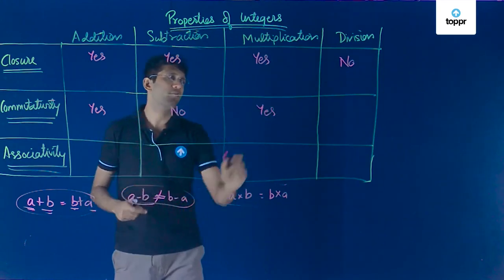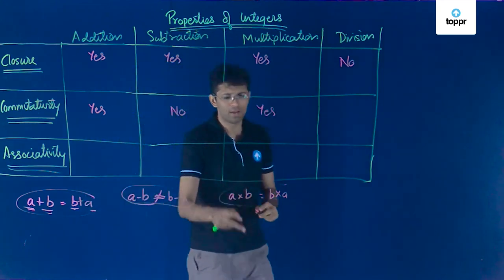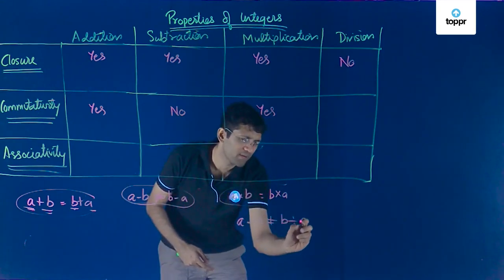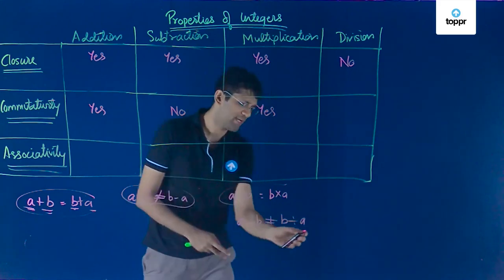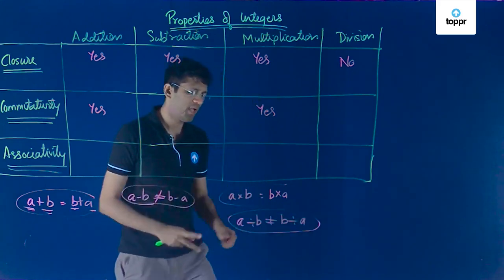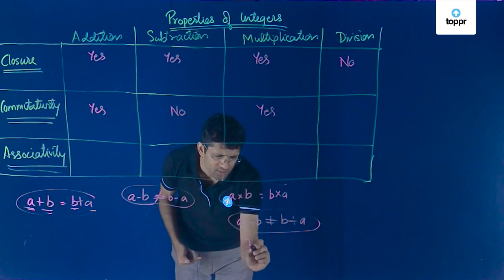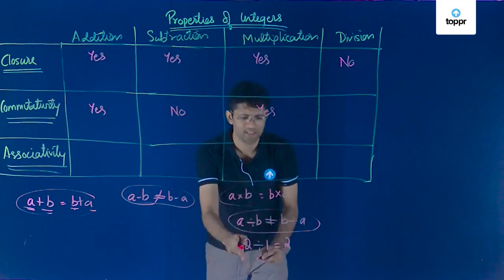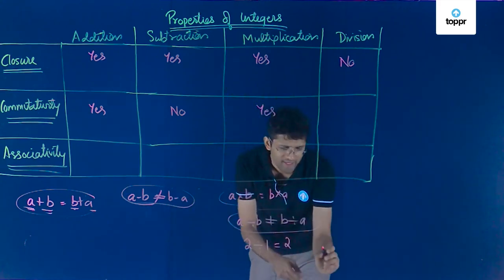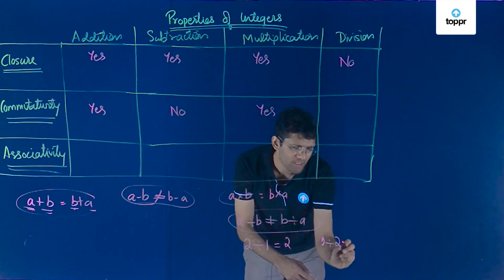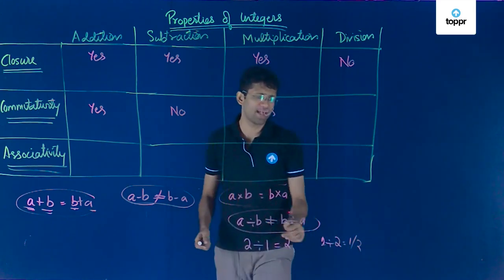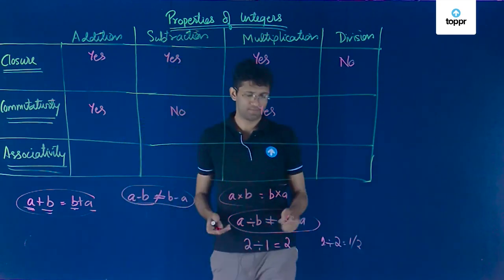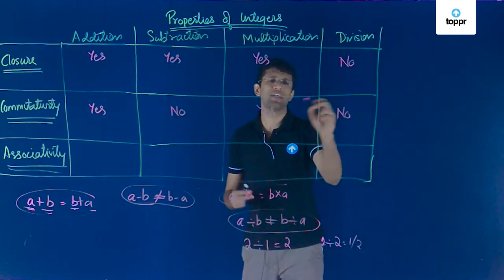For division, a ÷ b is not necessarily equal to b ÷ a. For example, if a = 2 and b = 1, then 2 ÷ 1 = 2, whereas 1 ÷ 2 = 0.5, which is not equal. So commutativity is not obeyed by division.